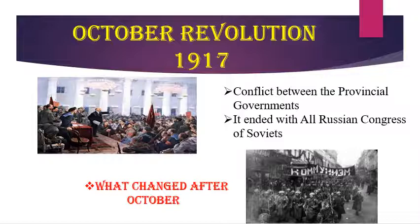There was heavy fighting in other cities, as Bolsheviks took hold of Moscow and Petrograd by December. In this way, the power of the Bolshevik group spread across entire Russia, slowly and steadily growing throughout the country.